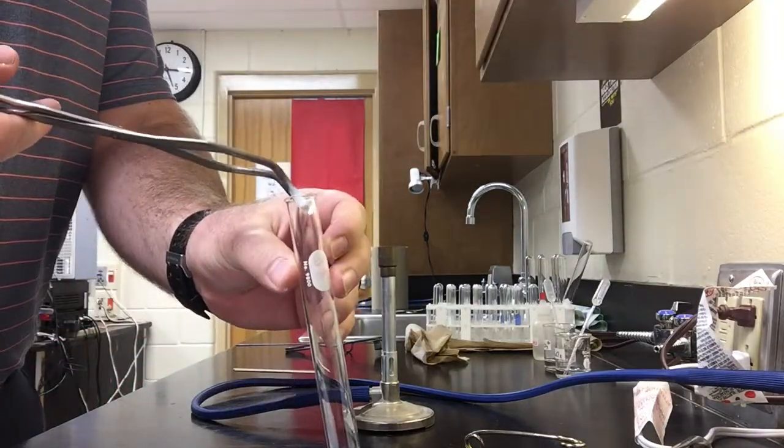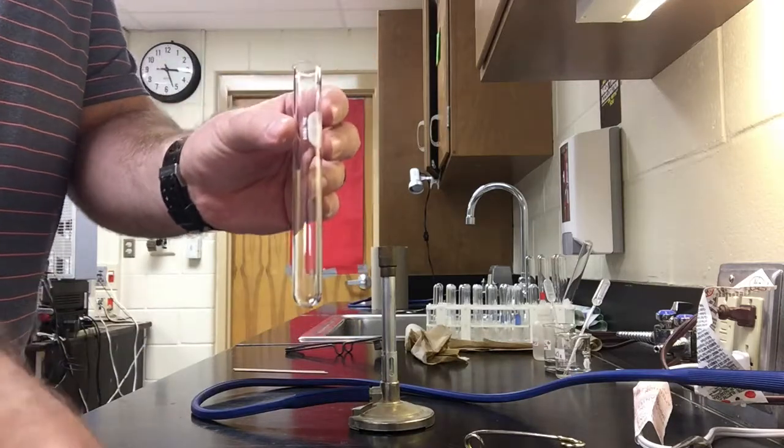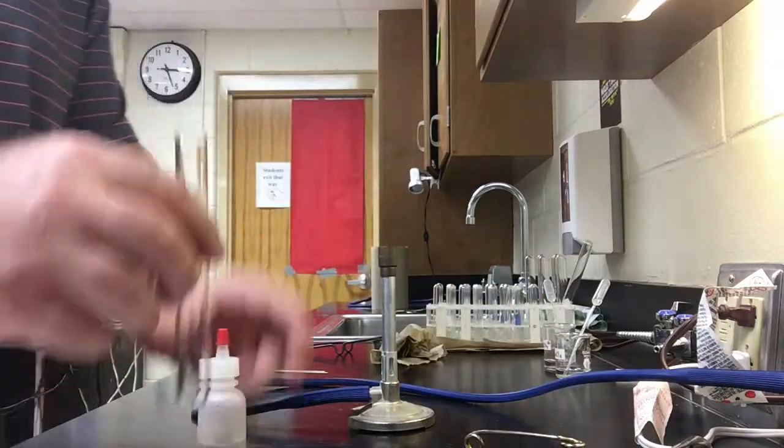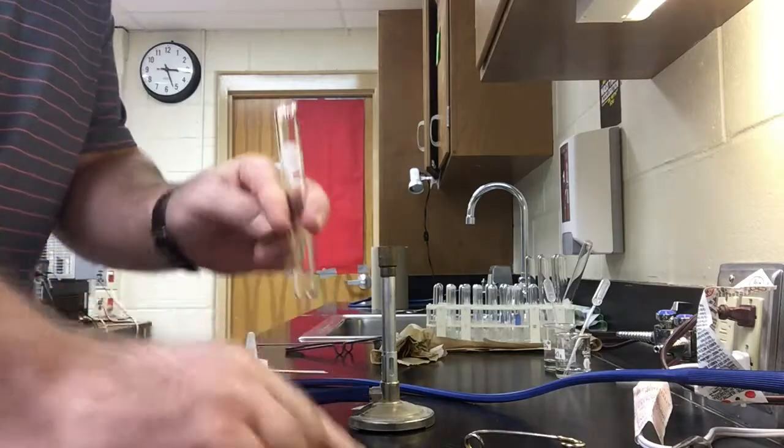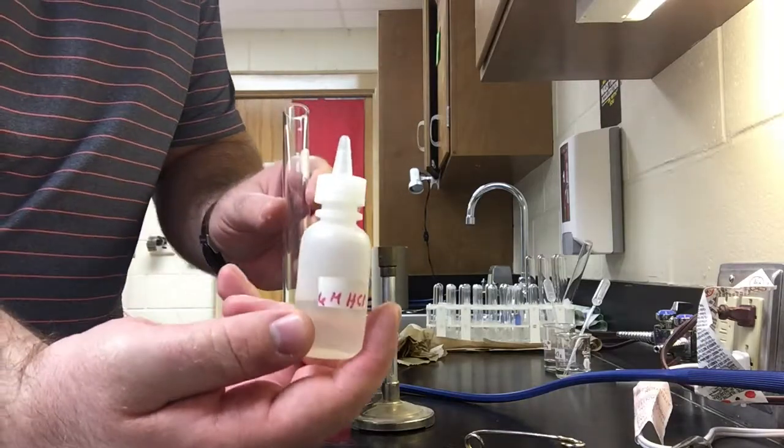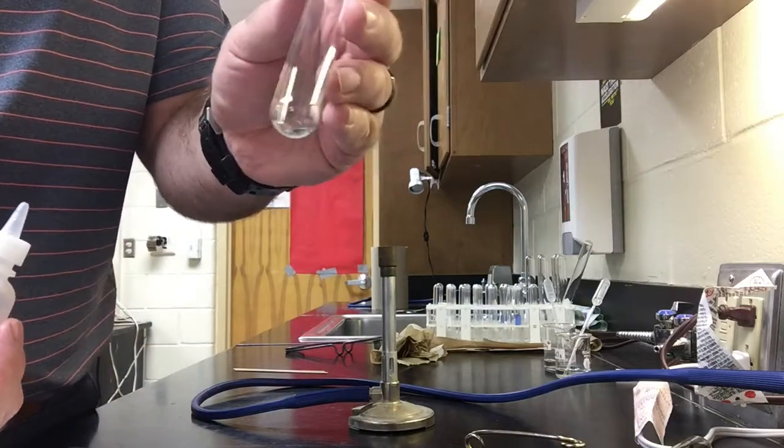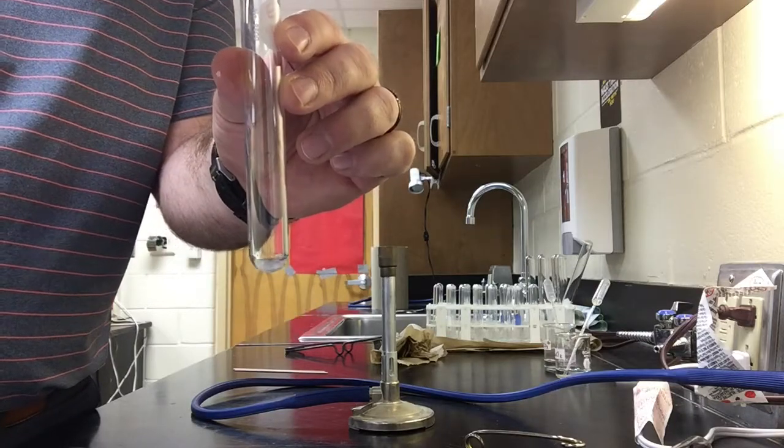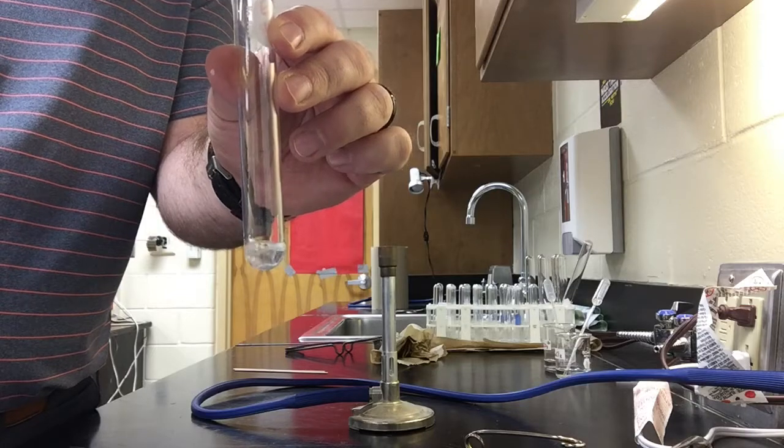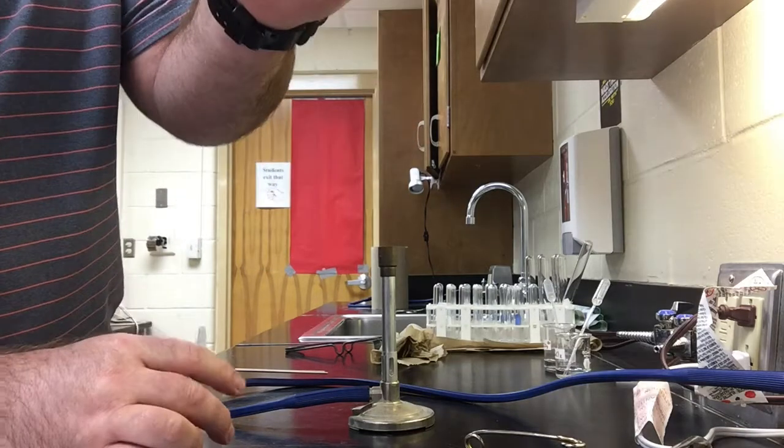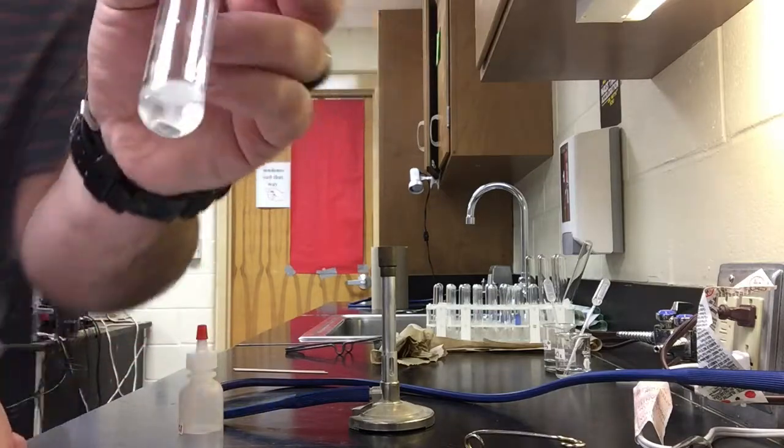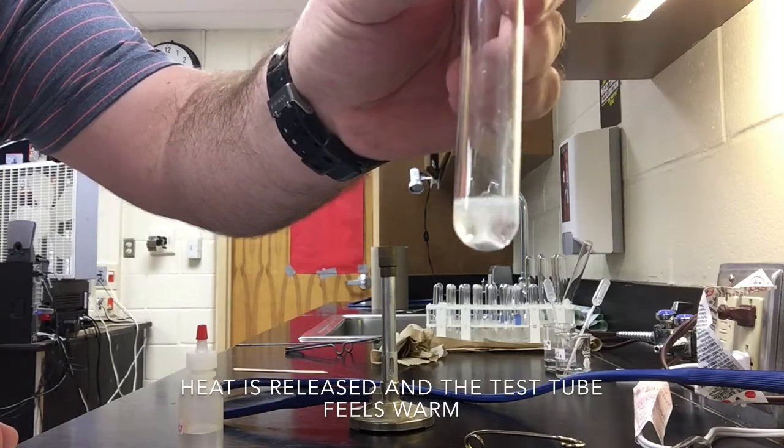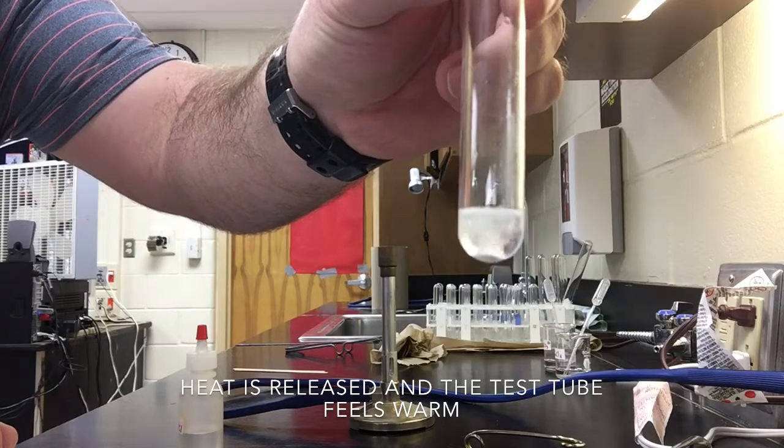All right, so I'm going to take the zinc and I'm going to place it into the test tube. Now, in addition to the zinc at the bottom of the test tube, I'm going to add 6 molar concentration of hydrochloric acid until I have enough to cover up my zinc. So I'm going to go ahead and add that. Okay, so I'll let you take a look at the reaction that is taking place once I have added the hydrochloric acid to the zinc.